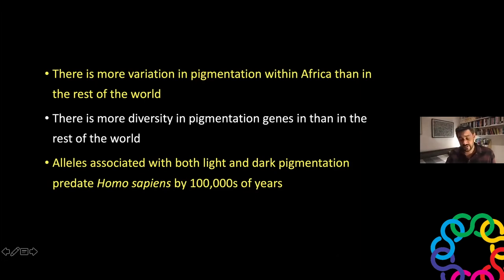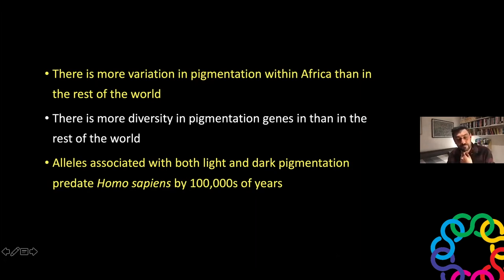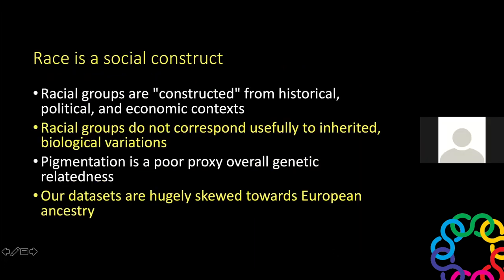Work by Brenna Henn, Nina Jablonski, and Sarah Tishkoff shows that variation in pigmentation genes predates Homo sapiens by hundreds of thousands of years — and we only know that because this work was done in the last five to ten years. The primary phenotype used to categorize, subjugate, and enslave people for several centuries is only something we started seriously studying in African people within the last decade. This is a problem for the genetics community.